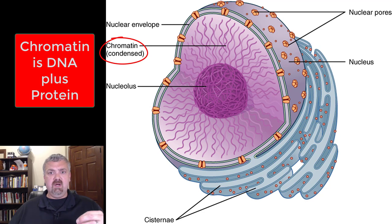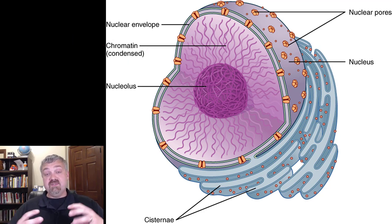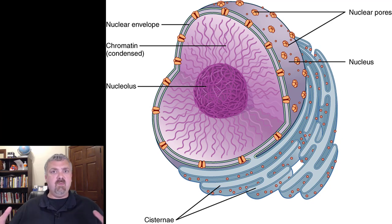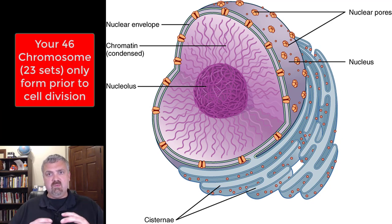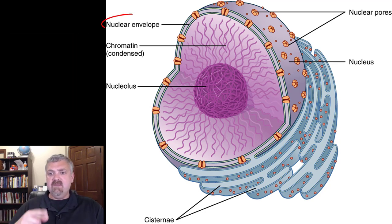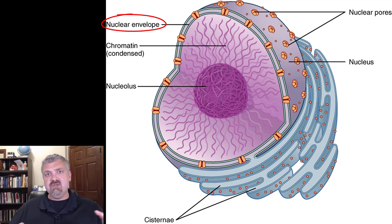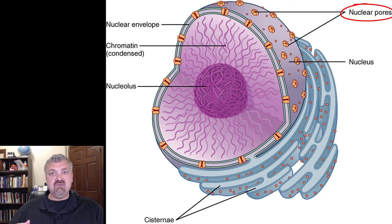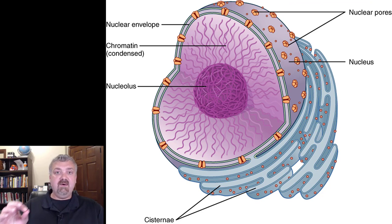Then you see the chromatin — that's your DNA with the proteins it's coiled around. Chromatin is what coils itself into chromosomes prior to cell division, so during mitosis. The nuclear envelope is like a vault — it houses and protects your DNA. Bacteria don't have the advantage of this double membrane protecting their DNA. And then there are the nuclear pores, which is how messenger RNA and other structures leave the nucleus to go to the cytoplasm, the guts of the cell.